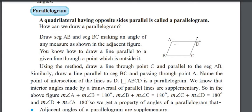AD is the transversal, so angle A plus angle B is an interior angle pair, and their sum is 180 degrees. Similarly, B plus C is 180, C plus D is also 180, and A plus D is also 180.